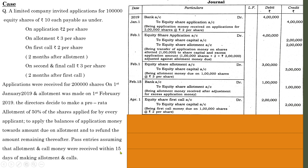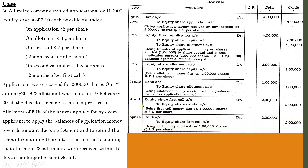15 days after the call is April 15. Entry: bank account debit to equity share first call. Same amount. Being call money received on 1 lakh shares at rupees 2 per share. From here onwards there are no excess amount adjustments with regard to these installments, so just pass the general entries as usual.